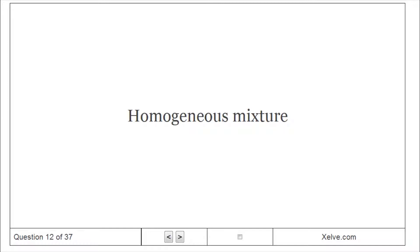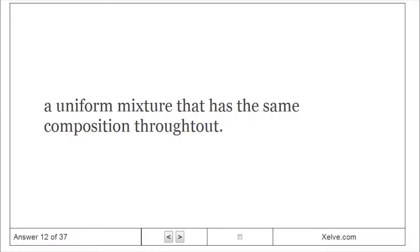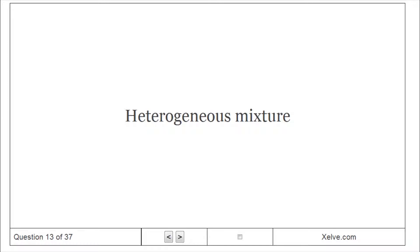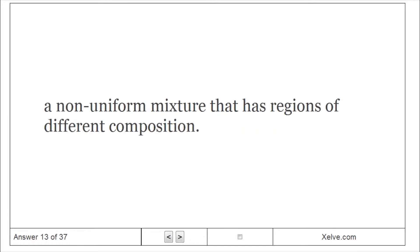Homogeneous Mixture: A uniform mixture that has the same composition throughout. Heterogeneous Mixture: A non-uniform mixture that has regions of different composition.